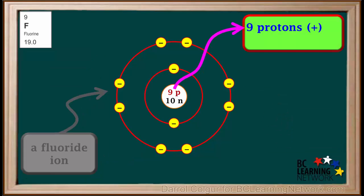A fluoride ion has a total of 9 protons, and 2 plus 8, or 10 electrons. 9 protons means it has 9 positive charges, and 10 electrons means it has 10 negative charges.